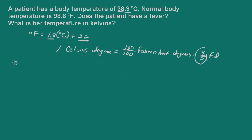So let's go ahead and do this conversion. We have degrees Fahrenheit equals 1.8 times 38.9 degrees Celsius plus 32. That gives us 102 degrees Fahrenheit.